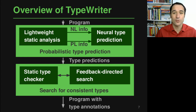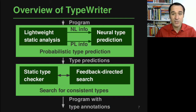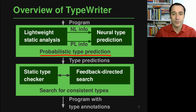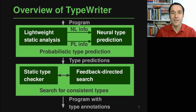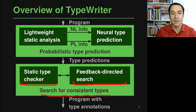This is exactly what our approach, TypeWriter, does. TypeWriter takes a program as input and returns a program with type annotations — it's essentially taking your code and writing types into it. It does so in two steps. The first step uses a probabilistic neural type prediction model that combines information from a lightweight static analysis and returns a list of type predictions for every code location where a type annotation is missing. The second step uses a static type checker and a feedback-directed search to find consistent types among the predictions, annotating only those that yield a type-correct program.